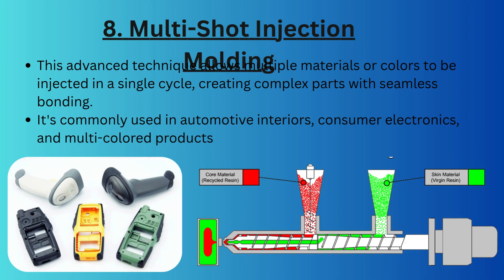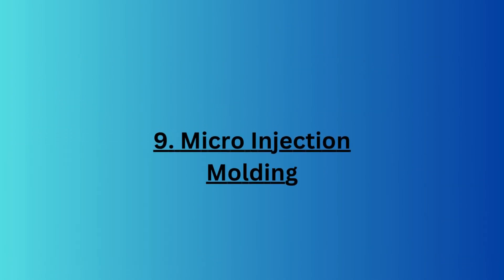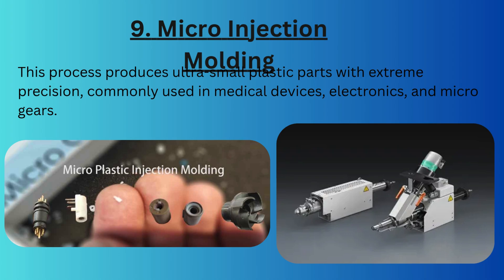Next we have multi-shot injection molding, an advanced technology that allows multiple materials or colors to be injected in a single cycle, creating complex parts with seamless bonding. This process is commonly used to manufacture automotive interiors, consumer electronics, and multi-color products.